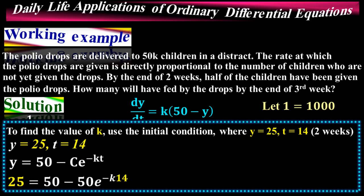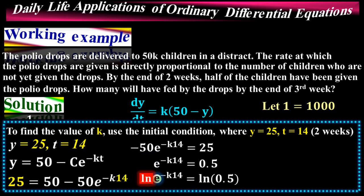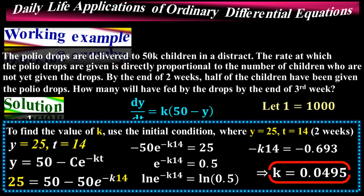Solving further: e^(−14k) = 0.5. Taking the natural log on both sides — the natural log cancels with the exponential — giving −14k = −0.693. Rearranging, k = 0.0495.